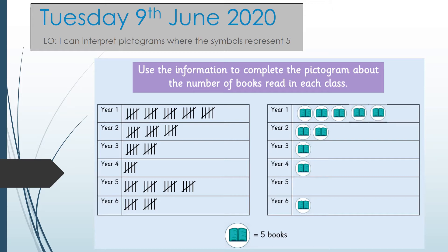There we go. Now if we look at Year 2, we've got 5, 10, 15, and on the pictogram we've only got ten — we need to add another five in. If you notice, when we're counting in fives the tally and the pictogram look very similar. Year 3: there's ten in the tally and only five in the pictogram, so we need to add another five.